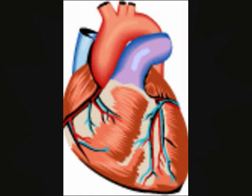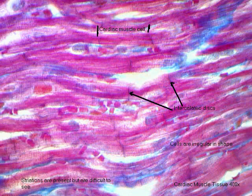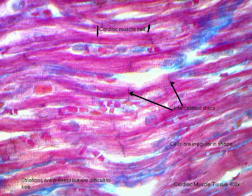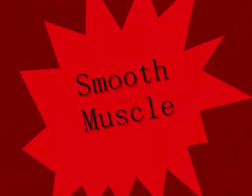Cardiac muscle is a type of involuntary striated muscle found in the walls of the heart, especially in the myocardium. Its cells are known as cardiac myocytes or cardiomyocytes. The cells that comprise cardiac muscle are sometimes seen as intermediate between the other two types in terms of appearance, structure, metabolism, excitation coupling, and mechanism of contraction.